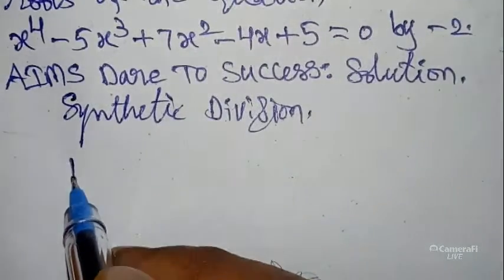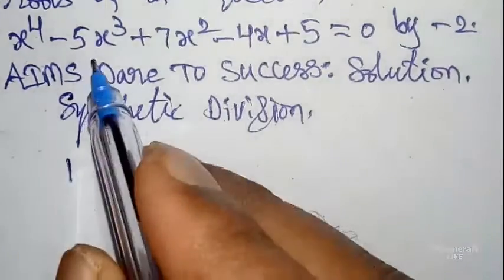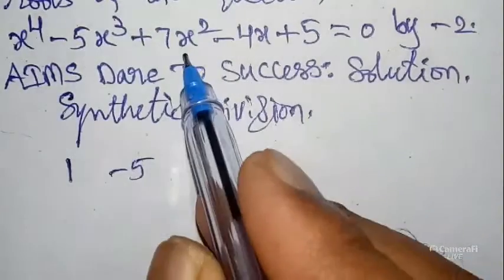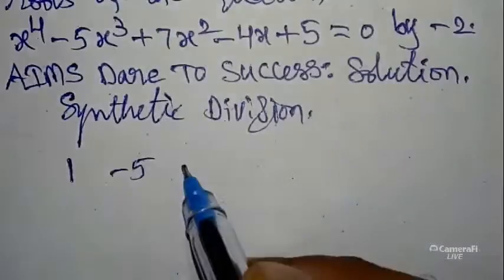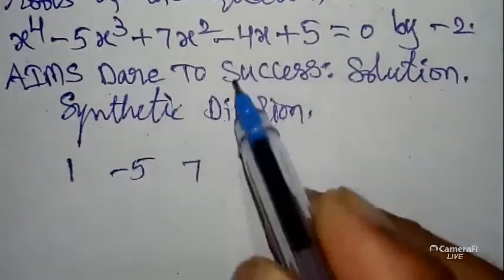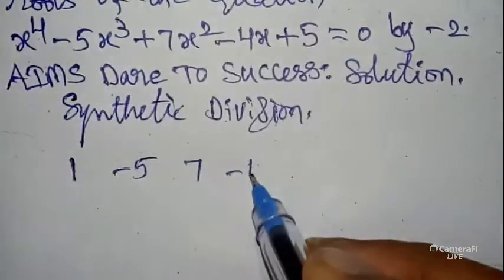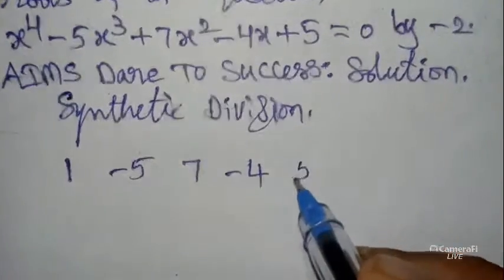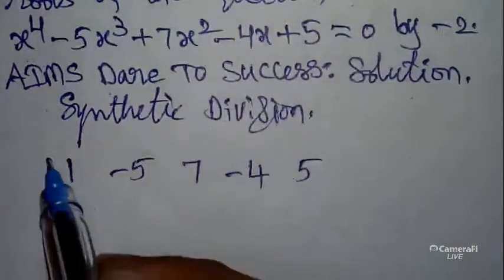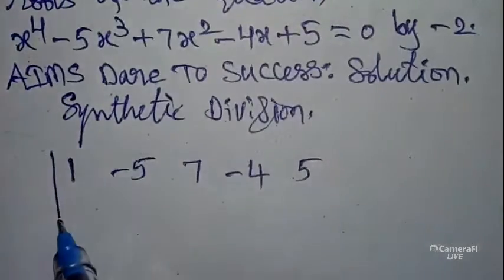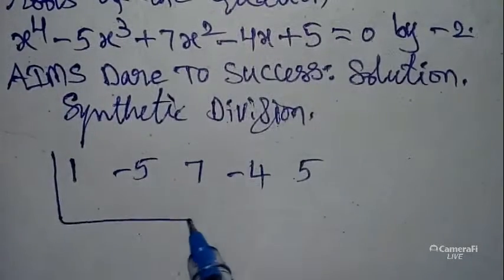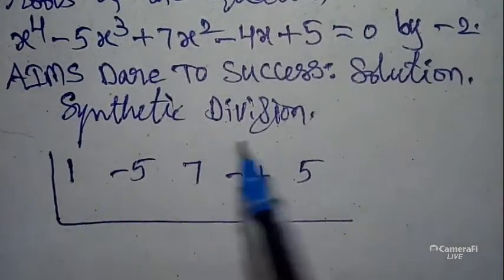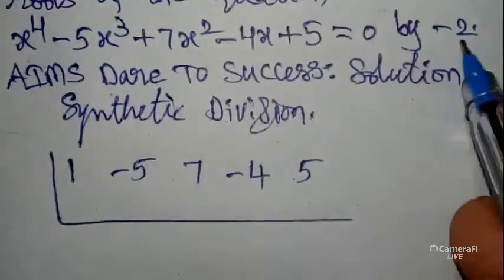The x⁴ coefficient is 1, x³ coefficient is -5, x² coefficient is 7, x coefficient is -4, and the constant is 5. Now take a box like this.